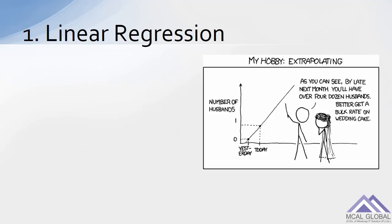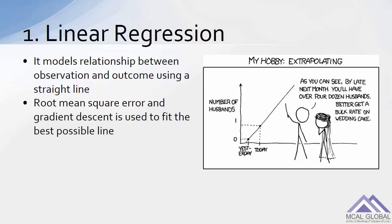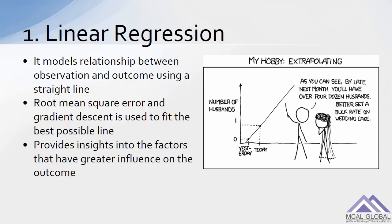Let us look into the top seven algorithms that every beginner should know. Number one: linear regression. It models the relationship between observation and outcome using a straight line. Root mean square error and gradient descent are used to fit the best possible line. It provides insights into the factors that have greater influence on the outcome.